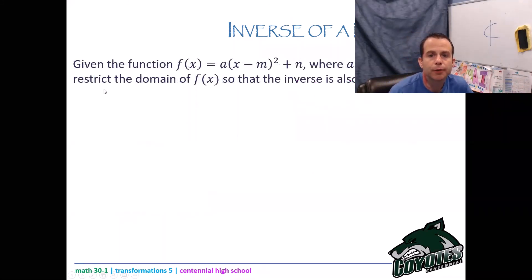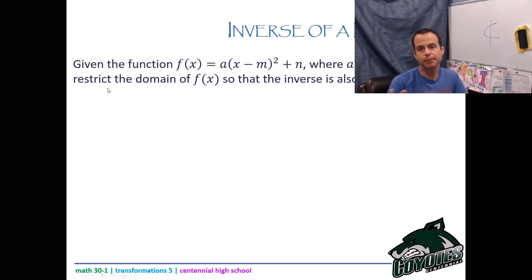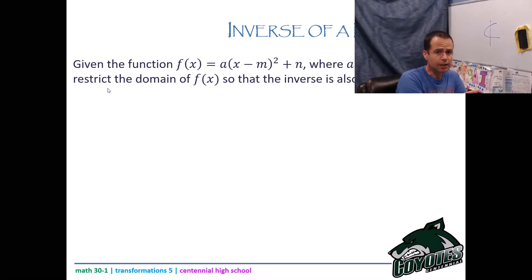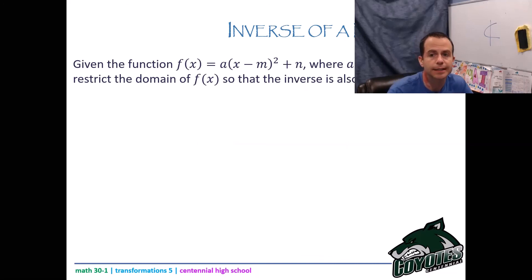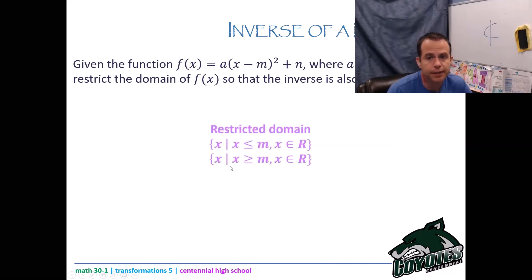Given the general function f of x equals a times x minus m squared plus n, restrict the domain of f of x so that the inverse is also a function. The x value of the vertex is at m, so just say x is less than m or x is greater than m.